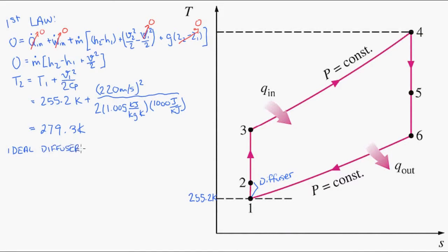Since this is an ideal diffuser we assume that entropy is constant. And using our isentropic formula we can calculate the pressure at state two, the inlet to the compressor.